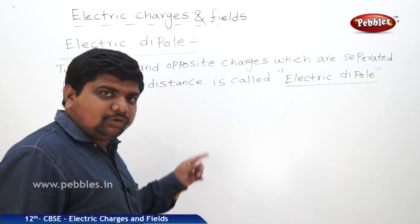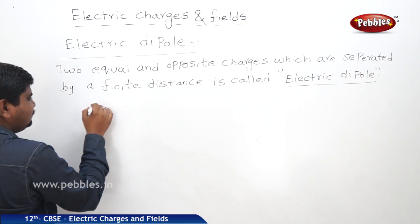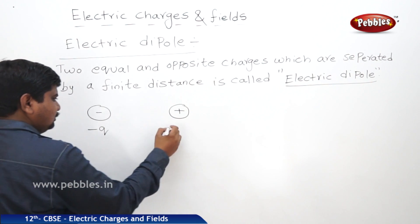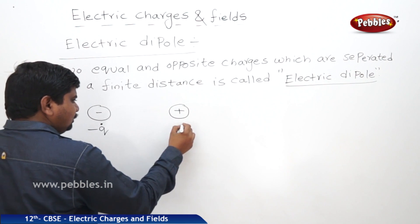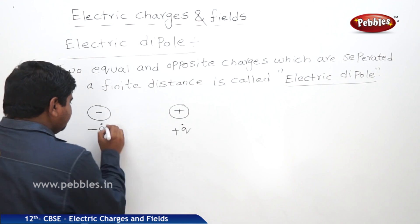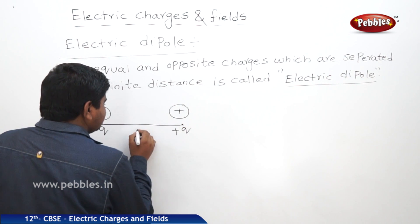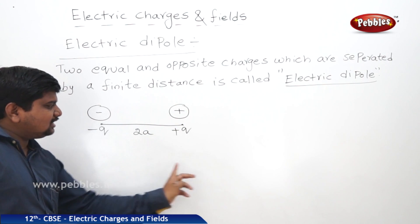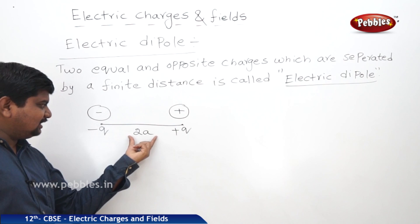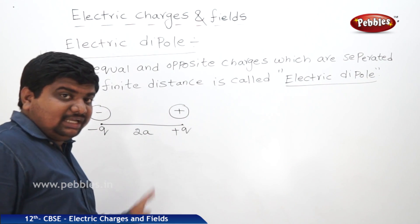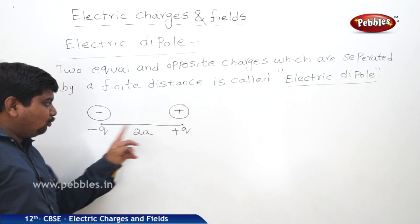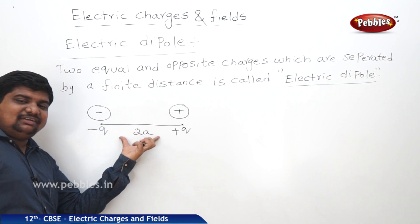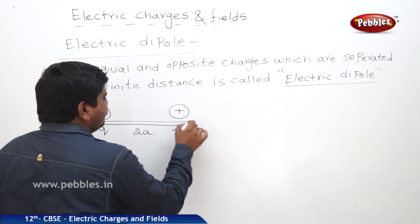The visualization of the electric dipole: it starts with a negative charge (minus q) and a positive charge (plus q), represented as point charges. These two charges are separated by a finite distance of 2a. The magnitude of the charges is q — signs differ (positive and negative) — and the distance between the two charges is 2a. This arrangement is called a dipole.